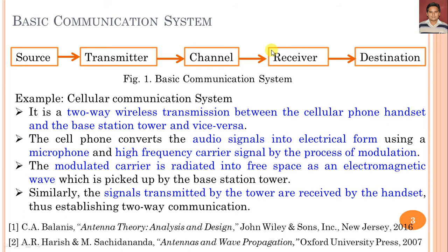The channel here can be wired or wireless, but in a cellular communication system, it is a wireless medium. In that case, the transmitter section transmits electromagnetic energy, and the receiver antenna receives the electromagnetic energy.